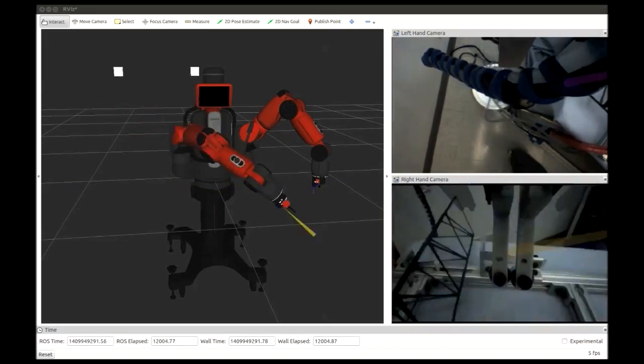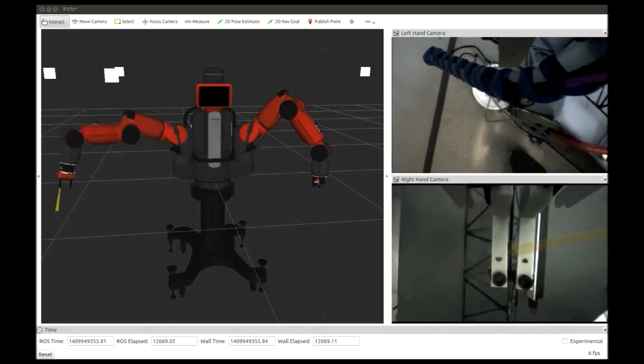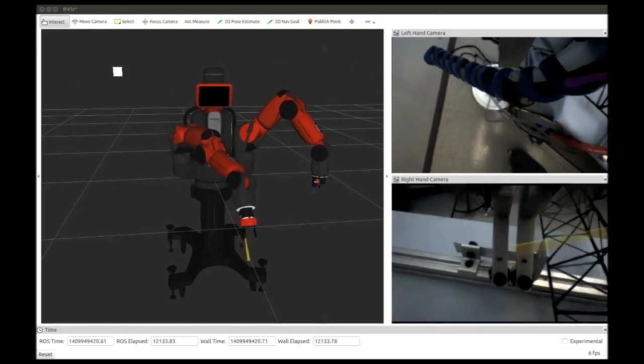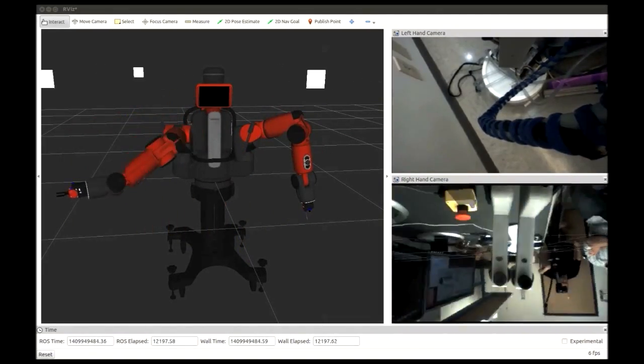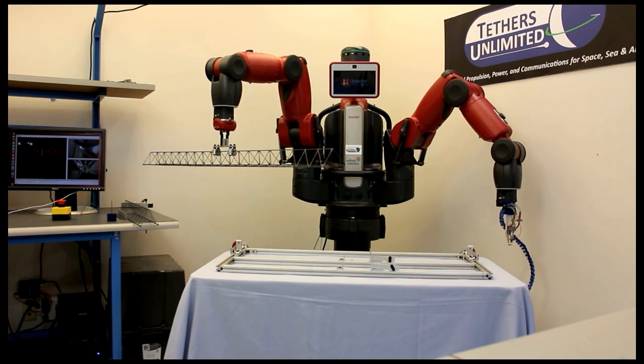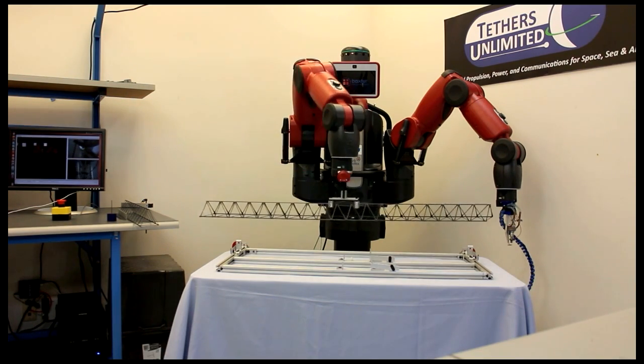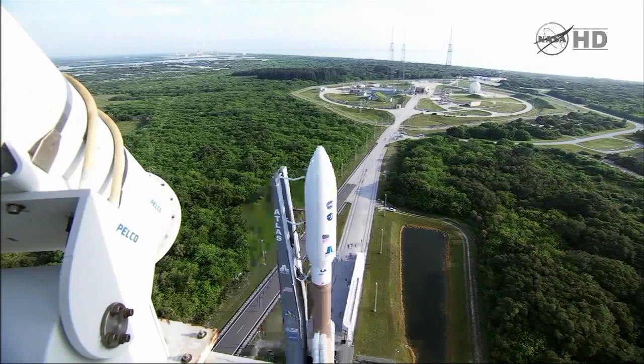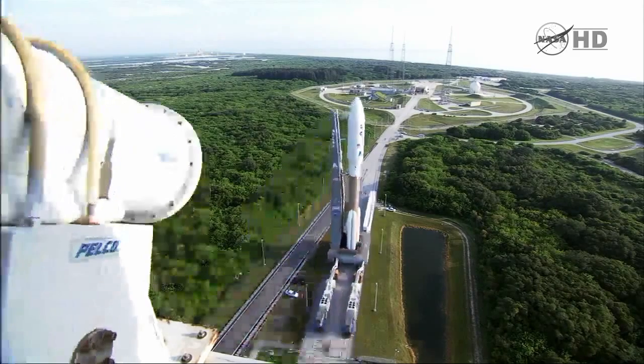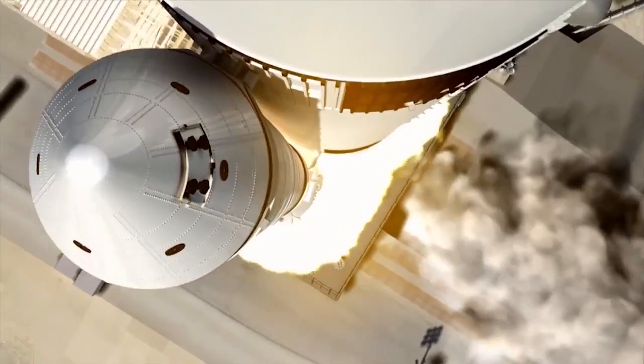We're working on SpiderFab architecture, which combines robotic assembly and additive manufacturing techniques to create large space systems on orbit. If we can do that, we can enable order of magnitude improvements in performance for cost, packing efficiency, and launch savings.